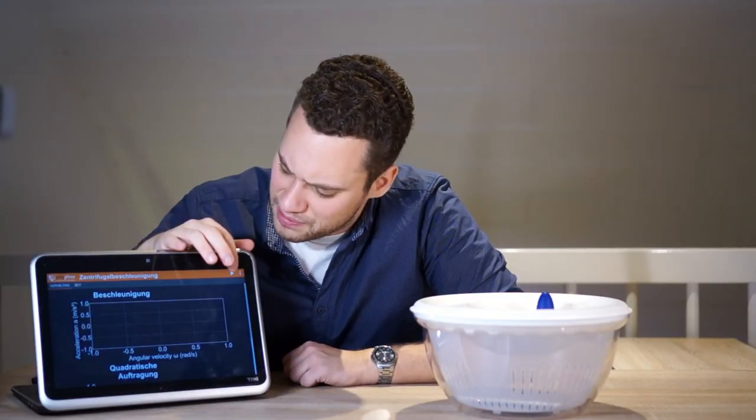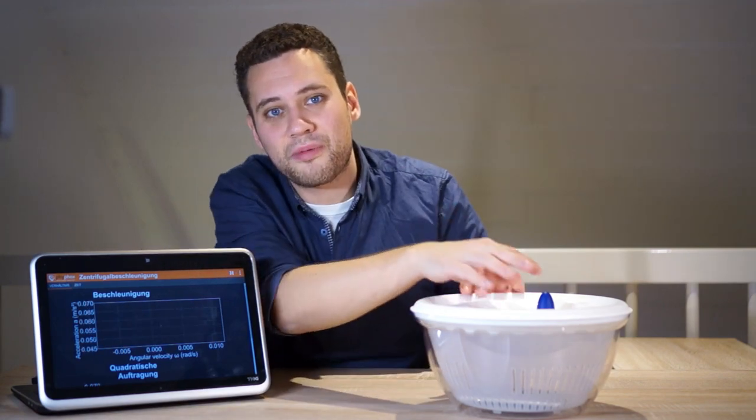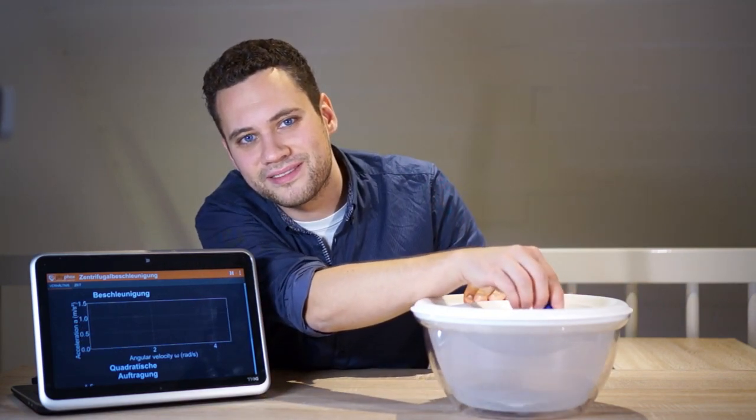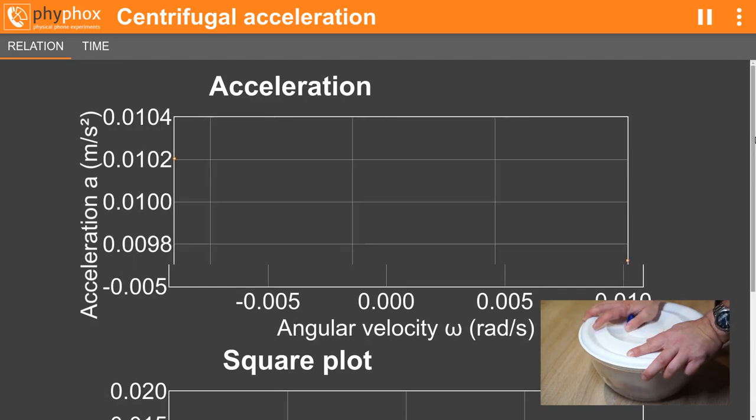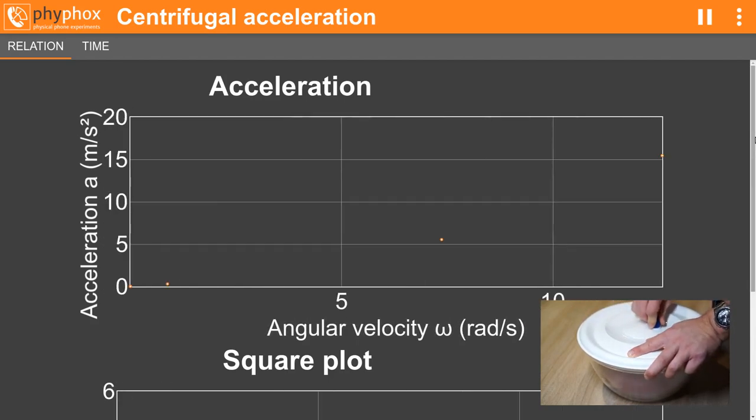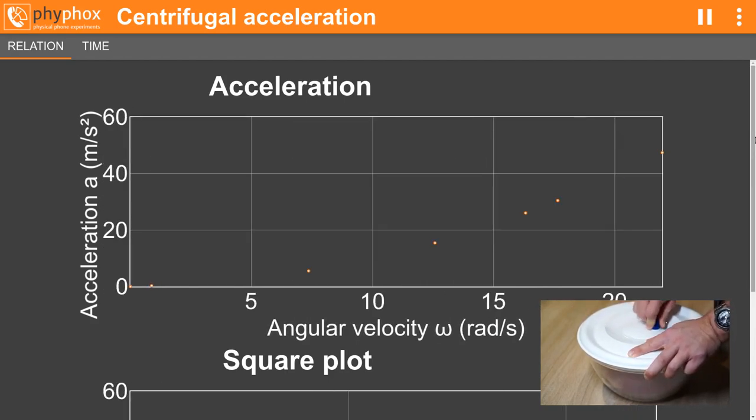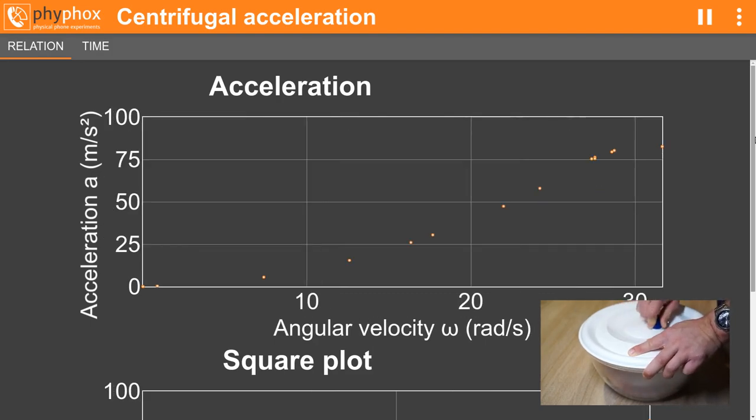Now you just have to start the experiment and operate the salad spinner. Phyphox will measure the angular velocity using the phone's gyroscope and the acceleration using the accelerometer. You should try different rotation speeds and generate data for a whole range of angular velocities. Just don't go too fast, as at some point your phone's sensors will not be able to keep up, which will lead to strange results.